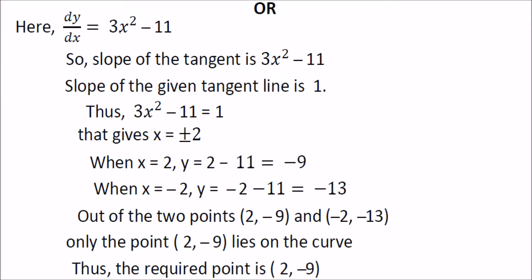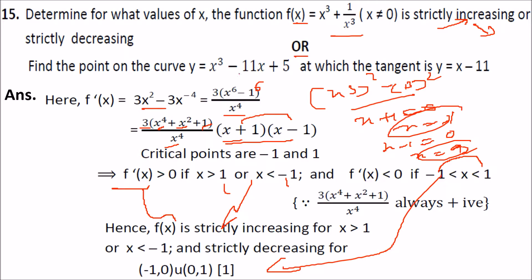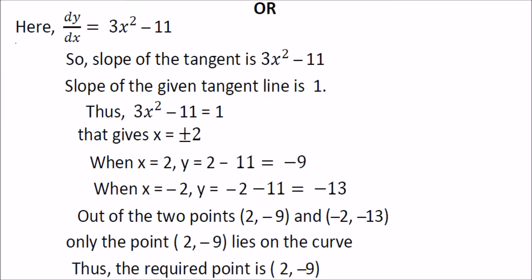The next problem: the curve is y equals x³ minus 11x plus φ. You have to find the point on the curve at which the tangent is parallel to a given line. We find dy/dx, so differentiating x³ minus 11x plus φ gives 3x² minus 11.